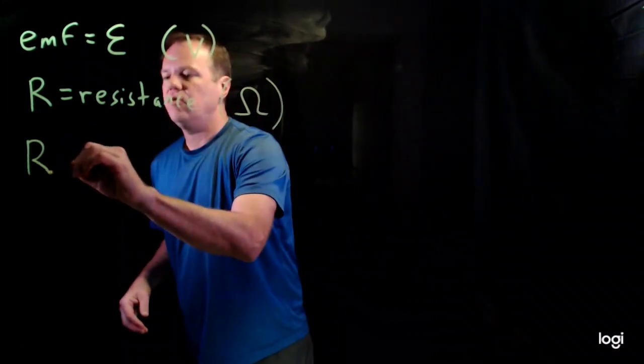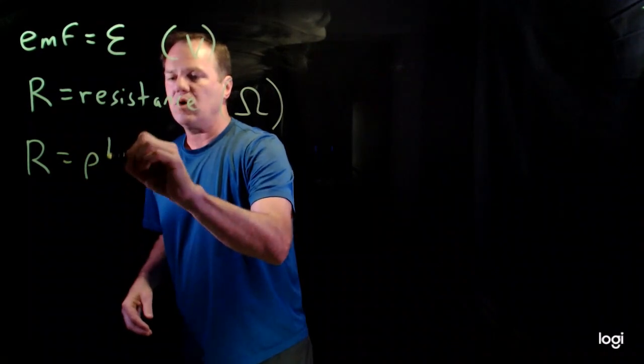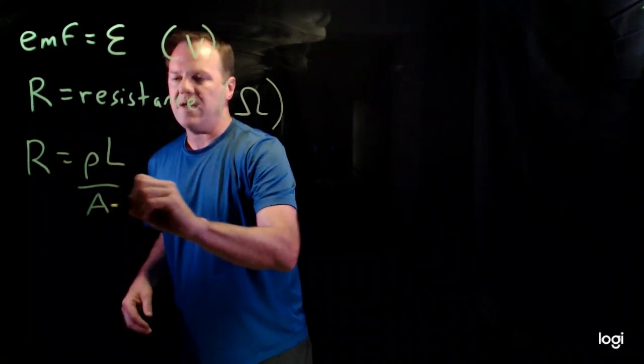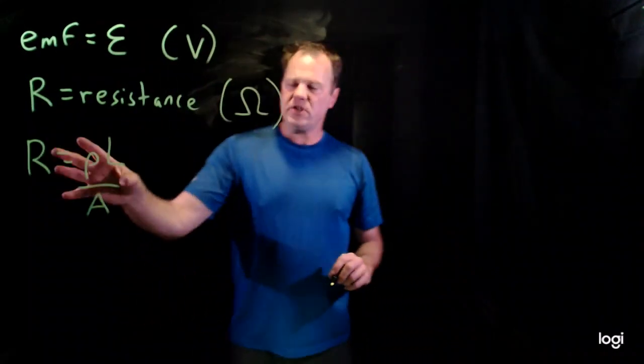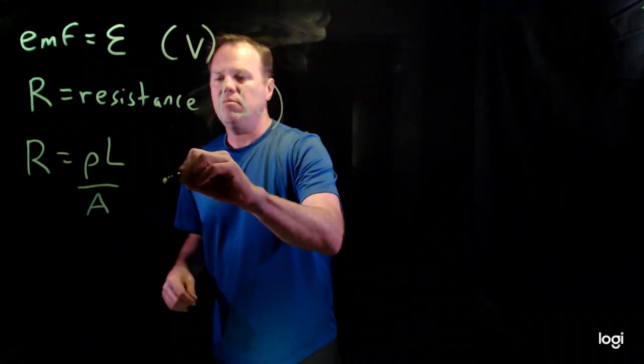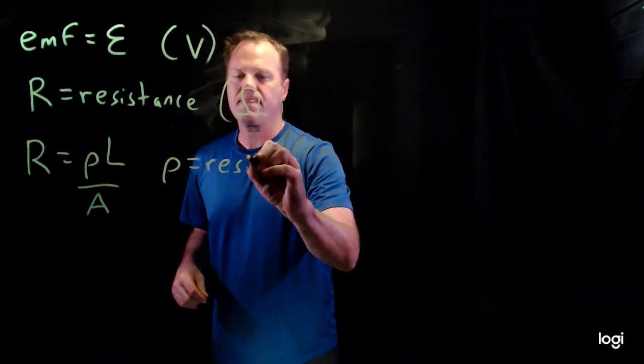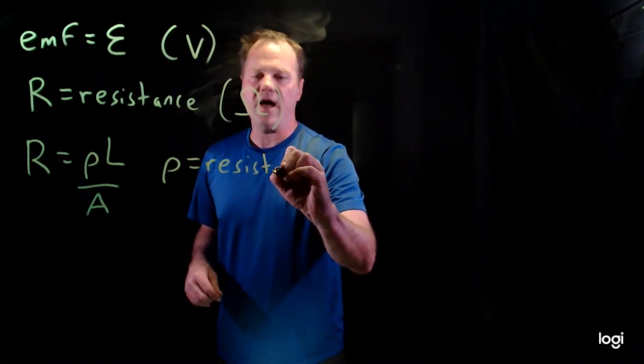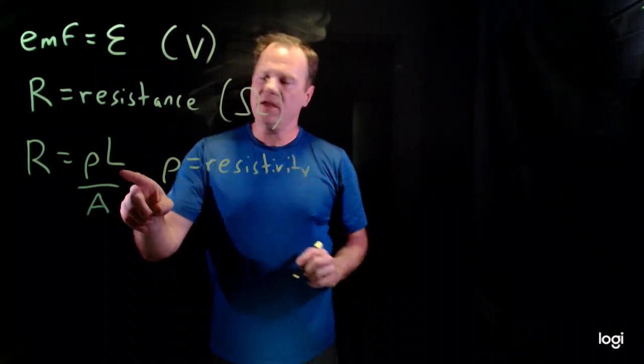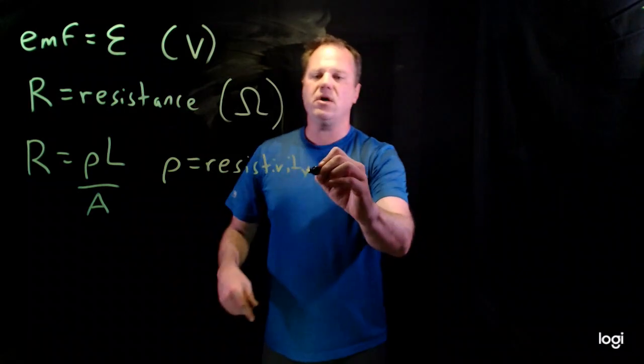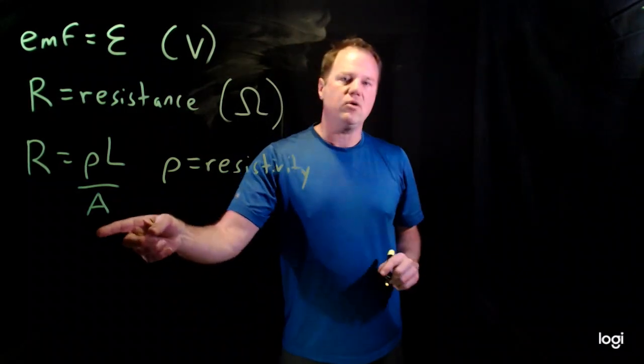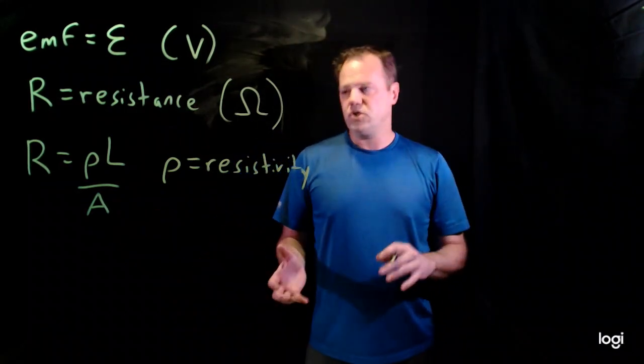And so here's the formula for it. Rho L over A. So the resistance of that object would be based on the resistivity. Use Greek letter Rho for that. And then L is the length measured in meters.